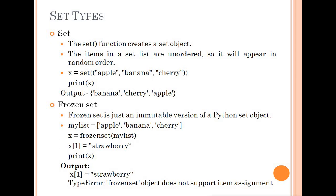A frozenset freezes the values — it is immutable, meaning you cannot change its values. For example, if you have a frozenset and try to assign x[0] or x[1], Python will raise a TypeError: 'frozenset object does not support item assignment'. Frozenset is simply the immutable version of a set.